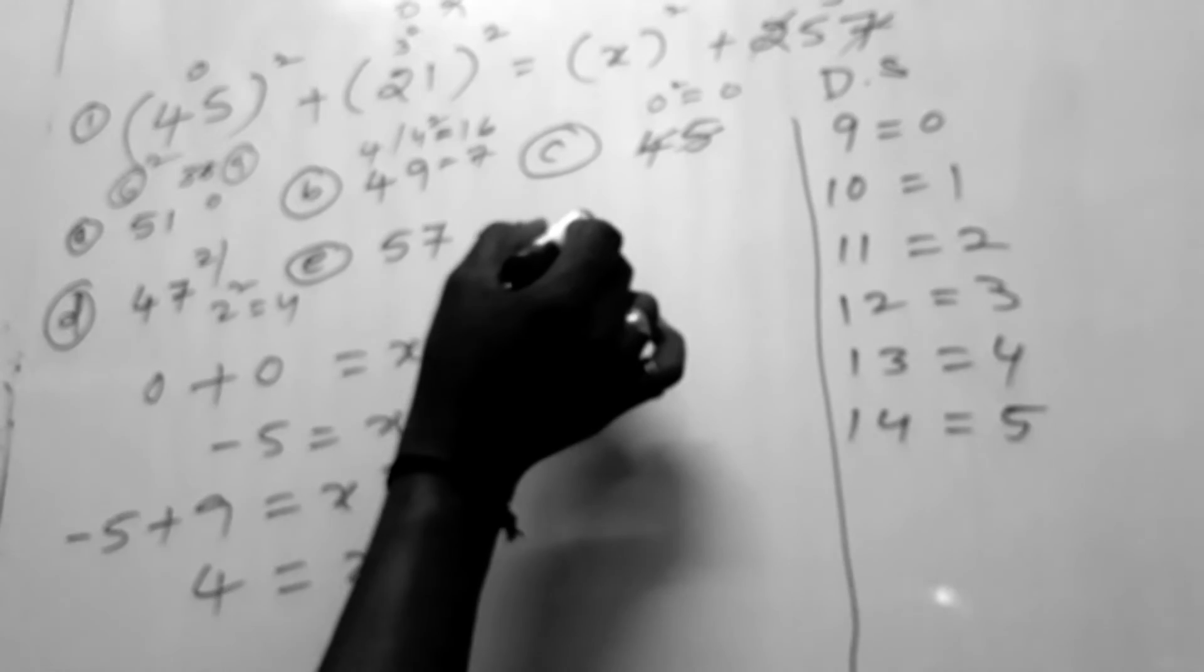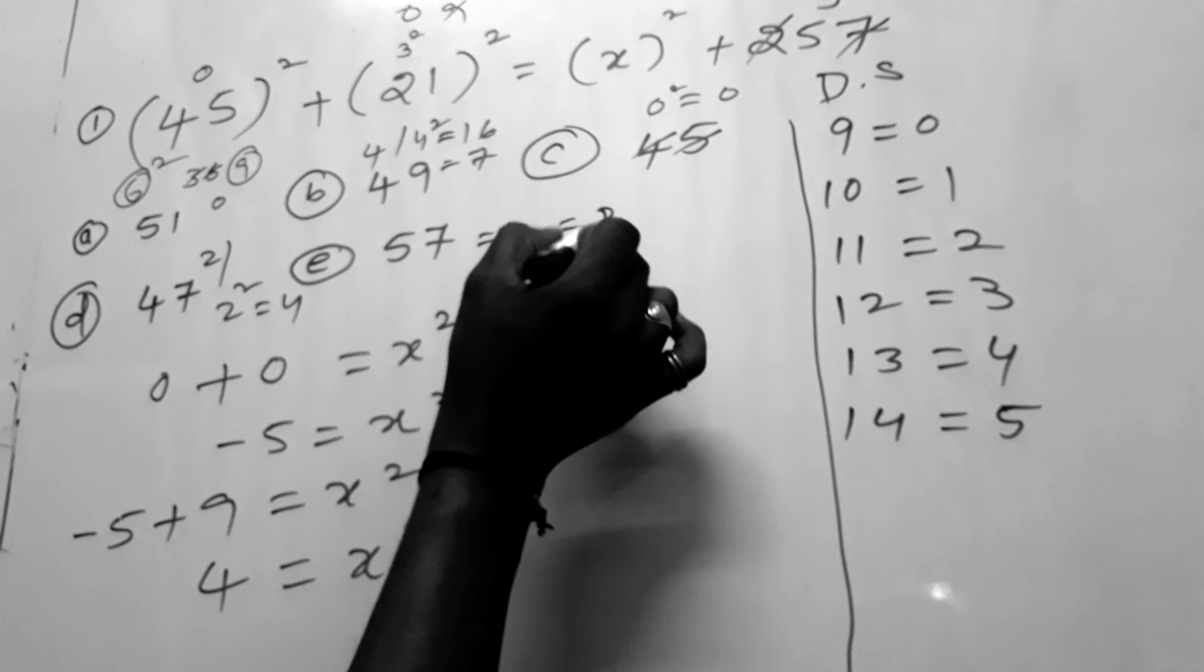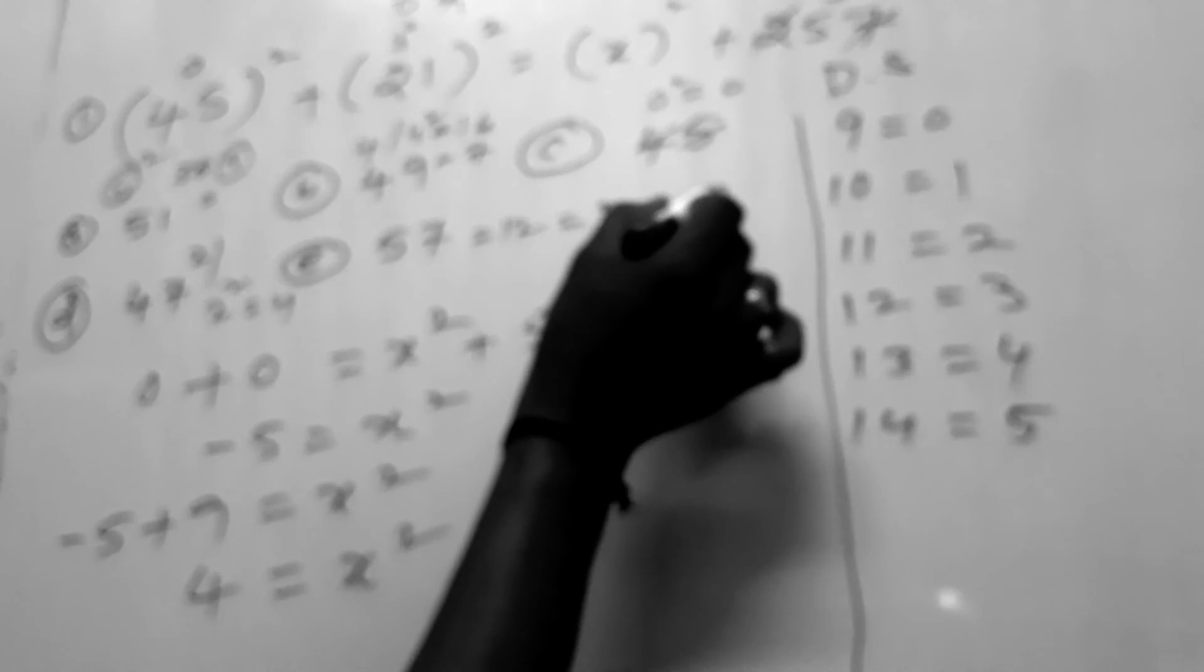5 plus 7 is nothing but 12. 12 is equal to digital sum 3. 3 square is equal to 9. 9 means digital sum is 0.